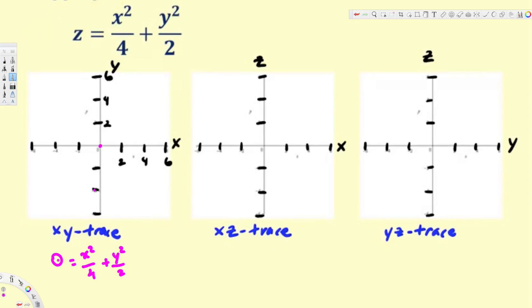If we take a value a little bit above the origin, for example z equals one, we are going to have an ellipse shape. So x squared over four — four is two squared — gives us positive two and negative two on the x-axis. And y squared over two gives square root of two, which is approximately 1.4 on the y-axis. Let's draw our ellipse right here.